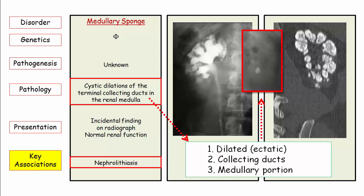Since the stones complicate a developmental abnormality, they are generally seen in younger patients. On the USMLE they will describe a radiograph with cystic dilation of the collecting duct and normal renal function and no known metabolic abnormalities such as hyperparathyroidism or hyperuricemia. They'll expect you to know this is medullary sponge kidney and then ask the derivative question such as which of the following is the most likely complication — and the answer is stones. That is the full picture on MSK.